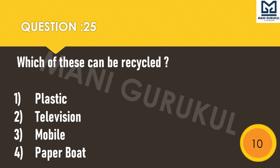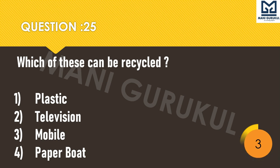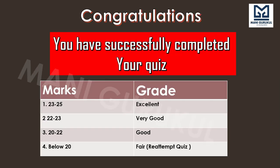Question 25: Which of these can be recycled? First: plastic. Second: television. Third: mobile. Fourth: paper bowl. Your time starts. This is the last question. Congratulations — you have successfully completed your quiz. You can check your answers.